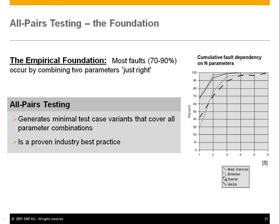This is shown in a graph analyzing many software classes: medical devices, browsers, servers, and NASA software. They analyzed how many parameters are needed to expose a defect. For the NASA data, one parameter covers about 70% of defects, and two parameters cover about 93%. If you test systematically all parameter combinations, you should catch 93% of bugs. All pairs testing generates minimal test cases that cover all parameter pair combinations — a proven industry practice.